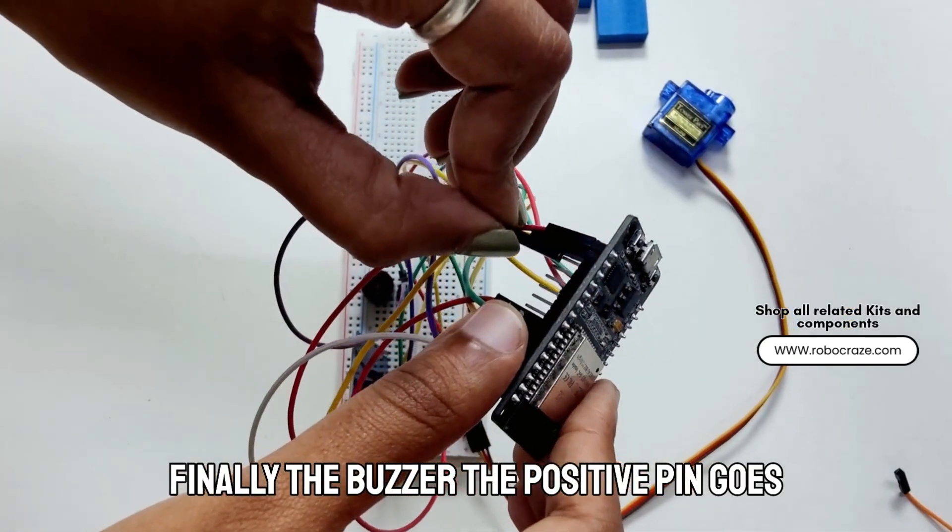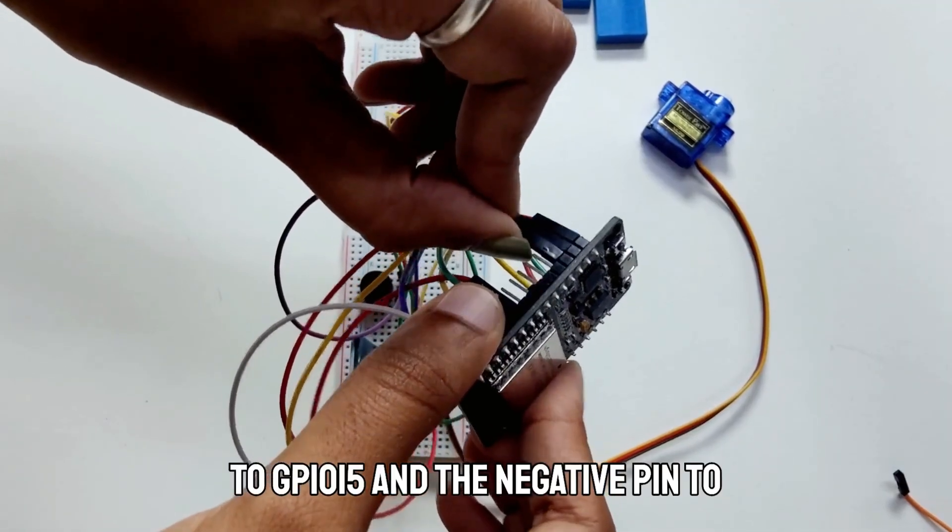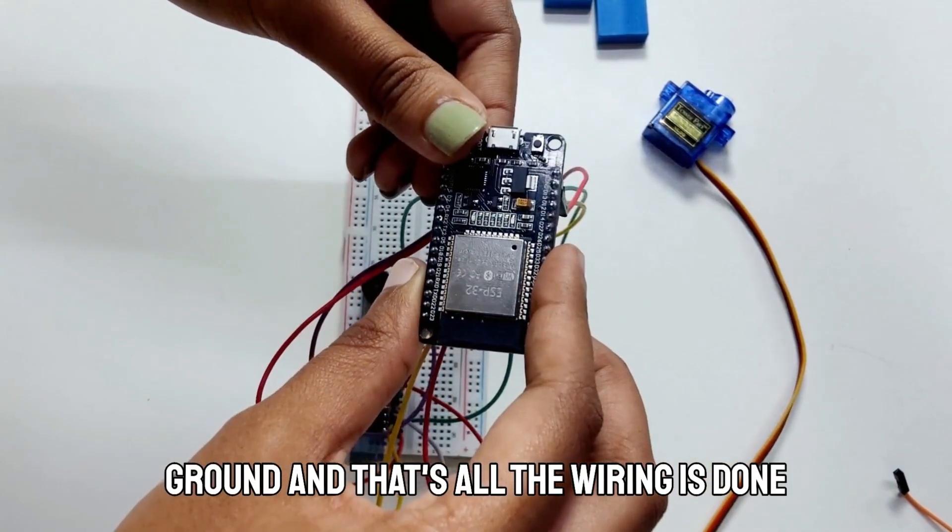Finally, the buzzer. The positive pin goes to GPIO15 and the negative pin to ground. And that's all the wiring is done.